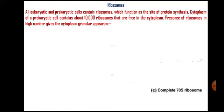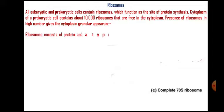All eukaryotic and prokaryotic cells contain ribosomes. These ribosomes function as the site of protein synthesis. The cytoplasm of a bacterial cell contains approximately 10,000 ribosomes, which are freely present in the watery solution of the cytoplasm. The presence of ribosomes in high numbers gives the cytoplasm a granular appearance.